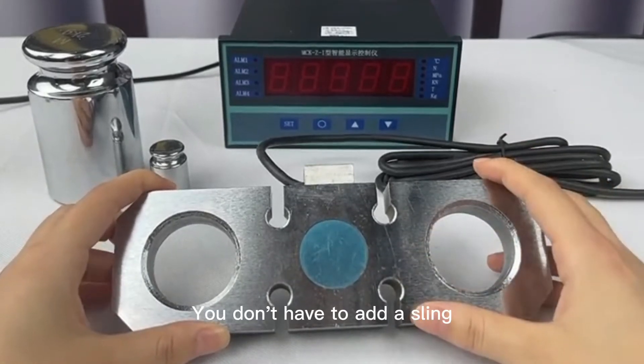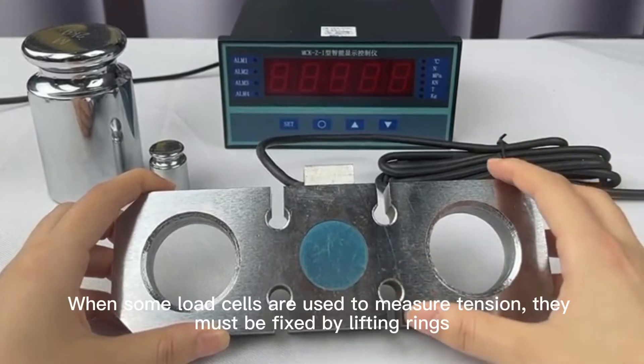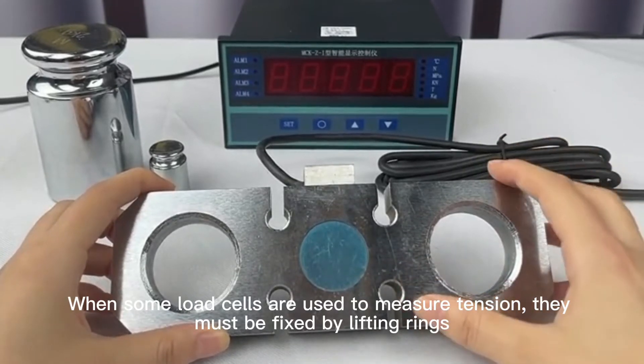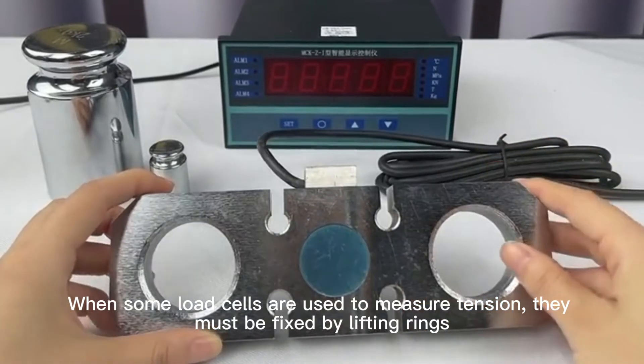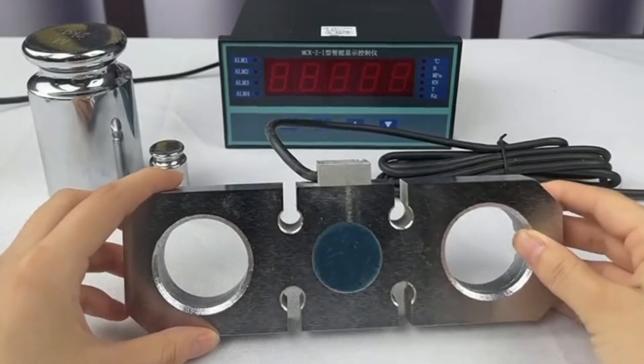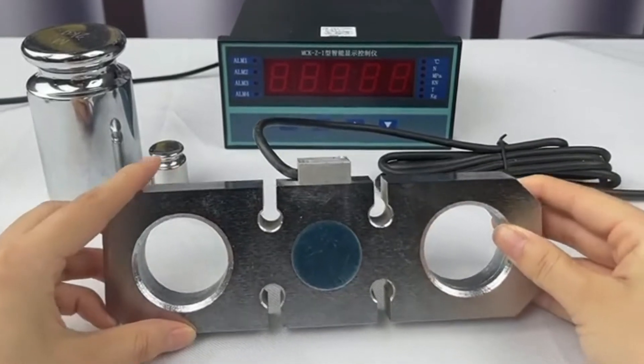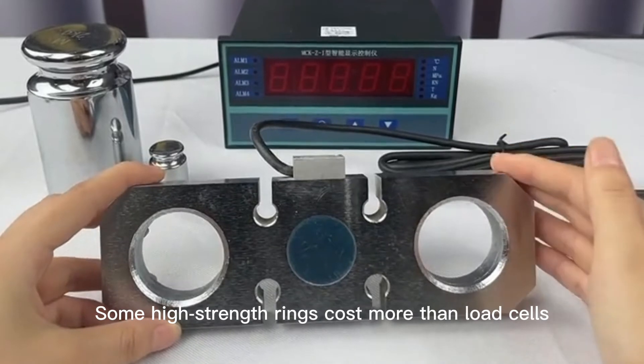You don't have to add a ceiling. When some load cells are used to measure tension, they must be fixed by lifting rings. Some high-strength rings cost more than the load cells themselves.